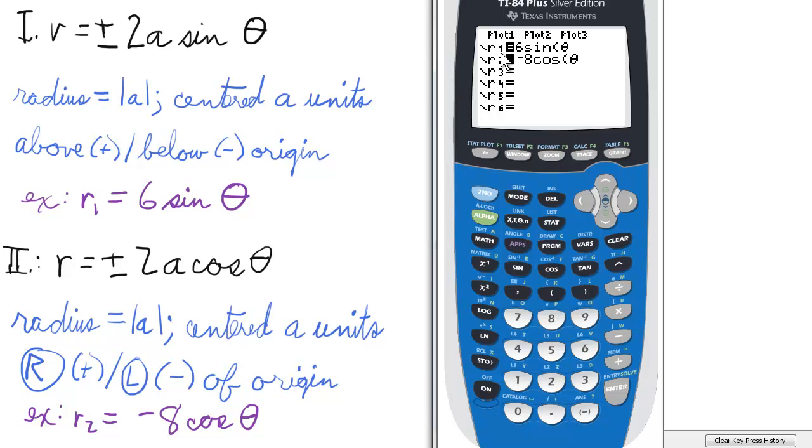In this example, r₁ equals 6 sine theta, so let's graph that. Notice it's a circle with a radius of 3, centered 3 units above the origin.